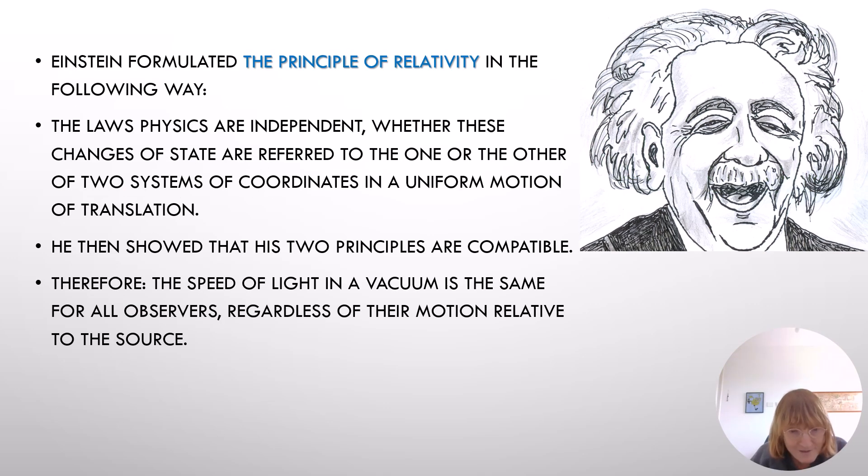Einstein formulated the principle of relativity in the following way: the laws of physics are independent whether these changes of state are referred to the one or the other of two systems of coordinates in uniform motion of translation. He then showed that his two principles, the postulate of light and the principle of relativity, are compatible. Therefore, the speed of light in a vacuum is the same for all observers regardless of their motion relative to the source.